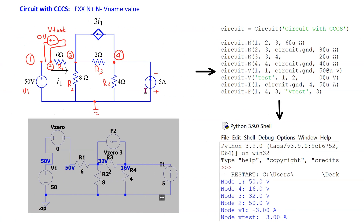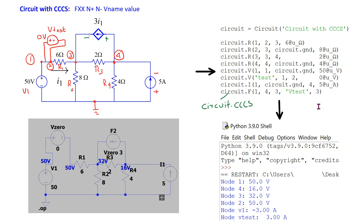Next, we look at a circuit with a current-controlled current source. This is specified in the netlist as circuit.f — we can also use the syntax circuit.cccs. We specify the two nodes where the dependent source is connected: the positive node is four and the negative node is three, because the current flows from positive to negative. Since this is a current-controlled source, we need a V test source in the path of the controlling current, with coefficient three. The PySpice simulation result matches the LTSpice simulation result.